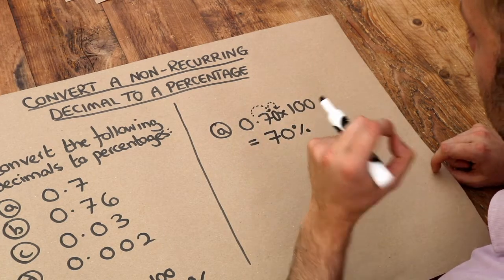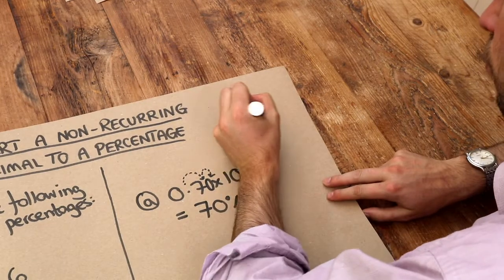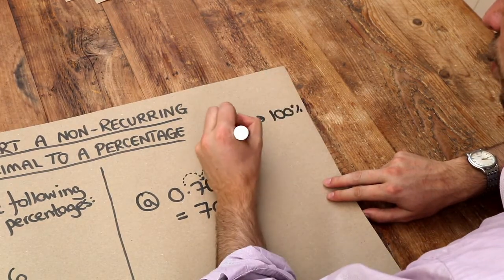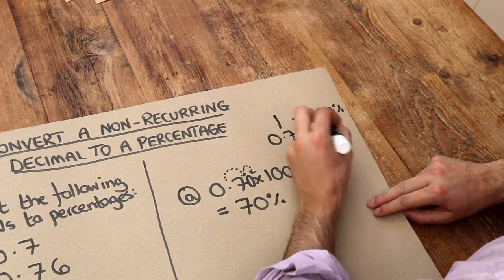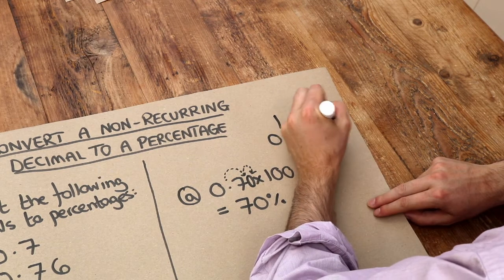And it's nice to have a feeling that our answer is right. We know that a whole is 100%. So if we have 0.7, can you see that 0.7 is just a bit less than a whole? So our answer should be a bit less than 100%.